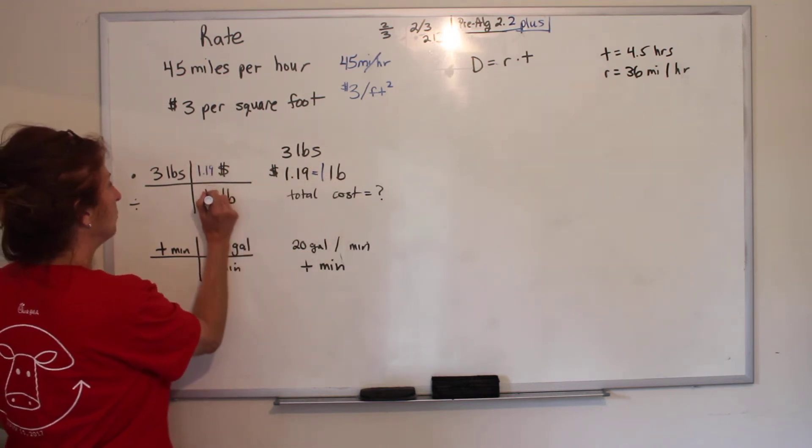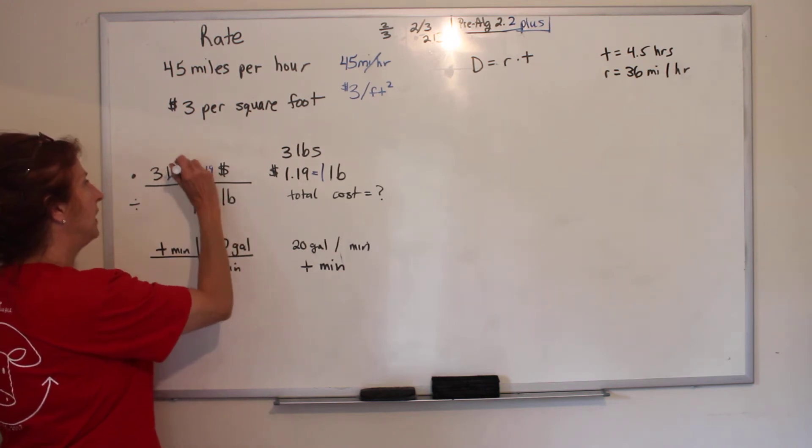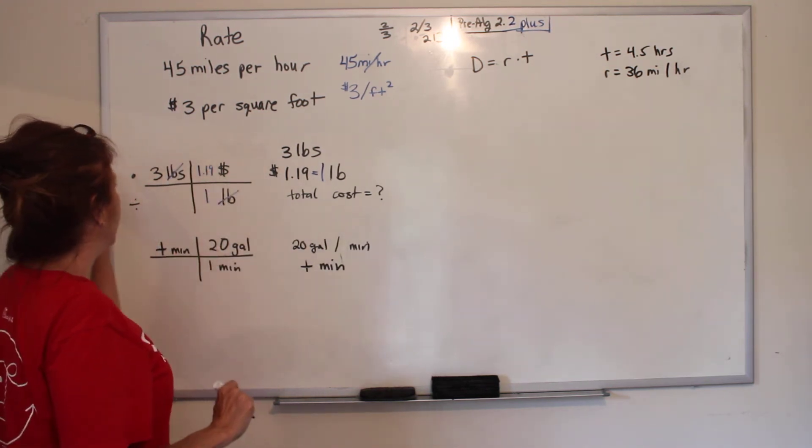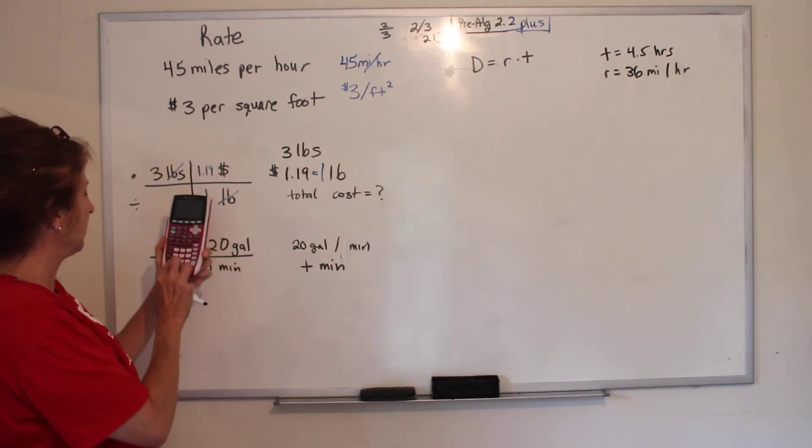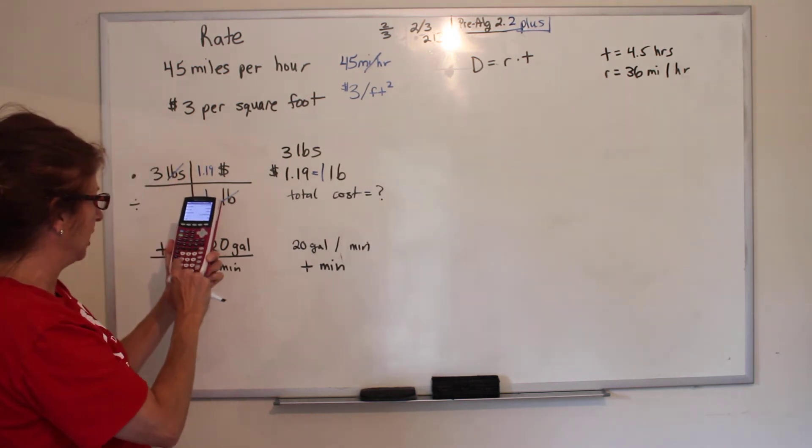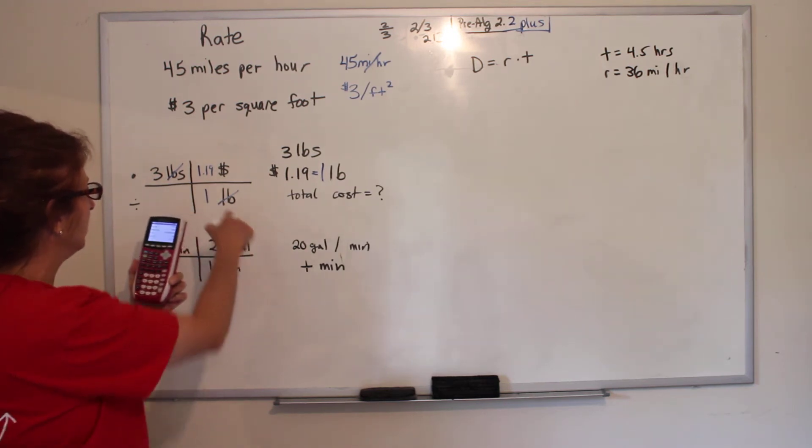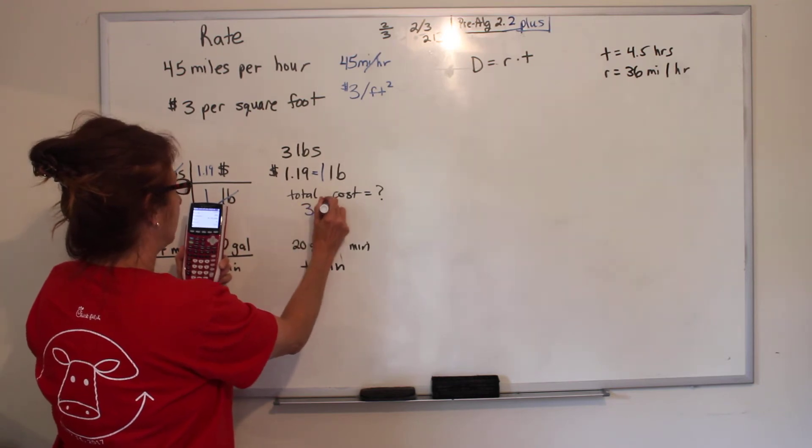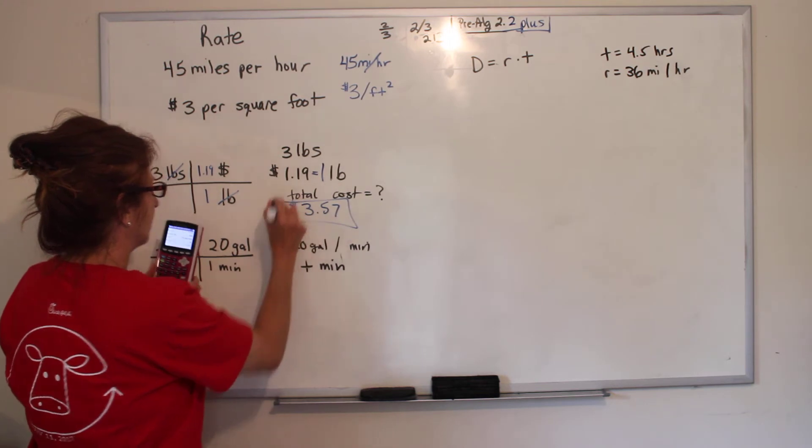Now we have pounds in the numerator and denominator, so they cancel out and we're left with money. Anything on top is multiplied. Anything on bottom is divided. So on our calculators, we do three times 1.19 divided by one, but you really don't have to divide by one. It equals $3.57. That was our total cost.